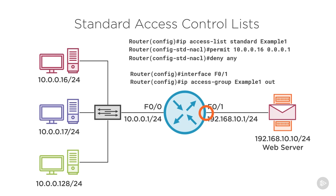That is how the access control list processes traffic. Before the router forwards a message out of F0.1, it puts the packet through the ACL filter to determine the appropriate action based on the source IP address information.